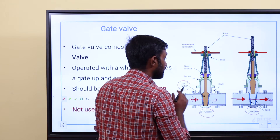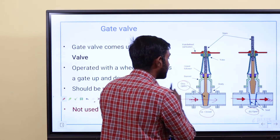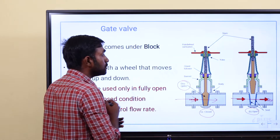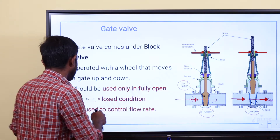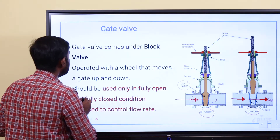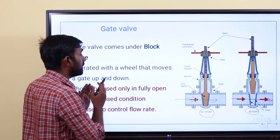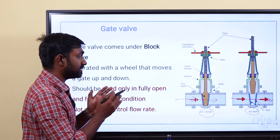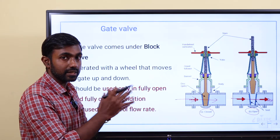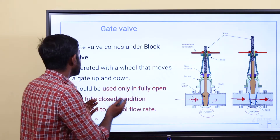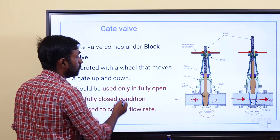There is no controlling in between — only open and closed. Fine controlling is not possible. We call it the gate. It is operated with a wheel that moves a gate up and down.